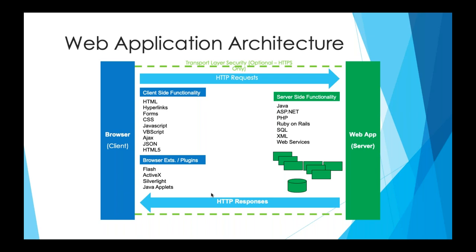In web application architecture, you need to understand what runs on the client side and what runs on the server side. HTML, JavaScript, VBScript, AJAX, JSON, HTML files — all run on the client side. That's why cross-site scripting impacts clients, since JavaScript runs on the client side. Extensions also run on the client side. On the server side, databases and languages like Java, Node.js, SQL Server, XML, and web services all reside and are called from the back end.